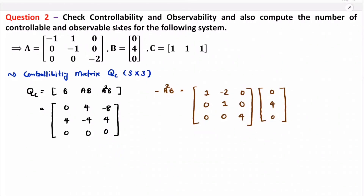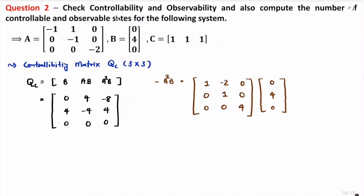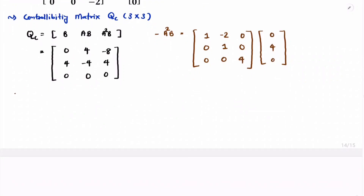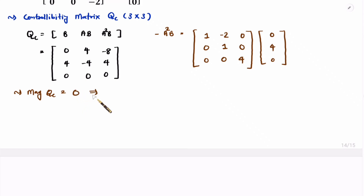So we have identified the controllability matrix QC. From QC we need to identify its rank. To find the rank, first identify the magnitude of QC. Here we have one row that is all zeros, so directly we can say the magnitude is 0. As the magnitude is 0, the rank of QC is not equal to the order of QC.